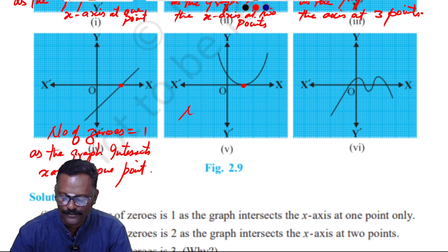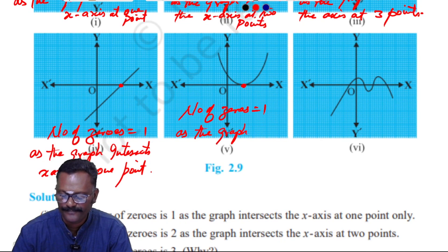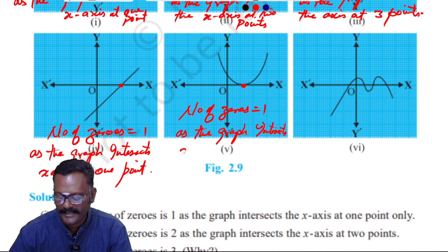So the number of zeros is equal to 1. The reason is that the graph intersects the x-axis at one point.